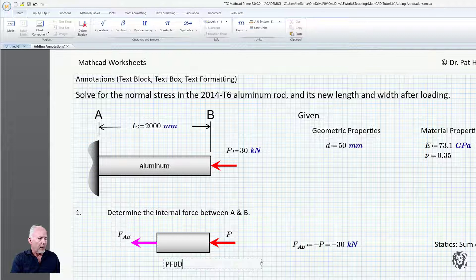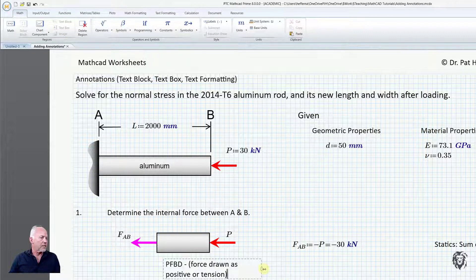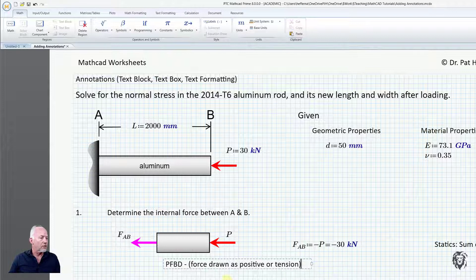So this is a partial free body diagram and I'll go force drawn as positive or tension and that way the sign will fix it. So just a little annotation so whoever's looking at the sheet will understand it.